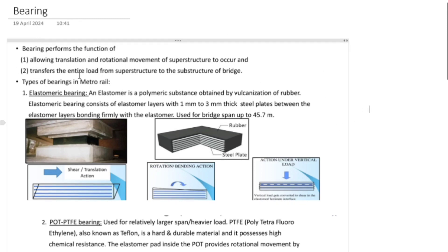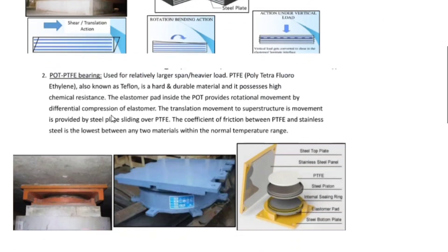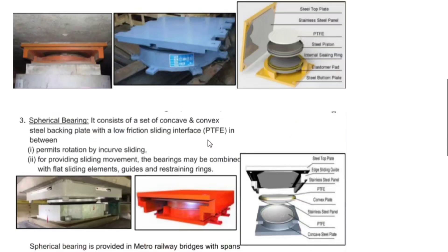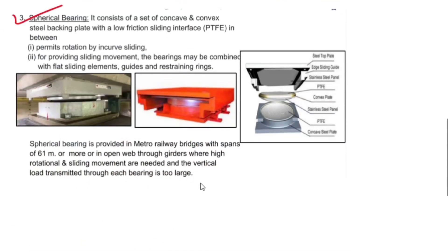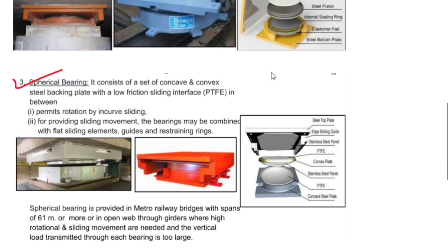Bearings allow translational and rotational movement of the superstructure to occur and transfer the entire load from the superstructure to the substructure of a bridge. Normally, bearings used are elastomeric, then pot PTFE, and the third one is spherical. Spherical bearings are generally used for spans of normally more than 45 to 60 metres.